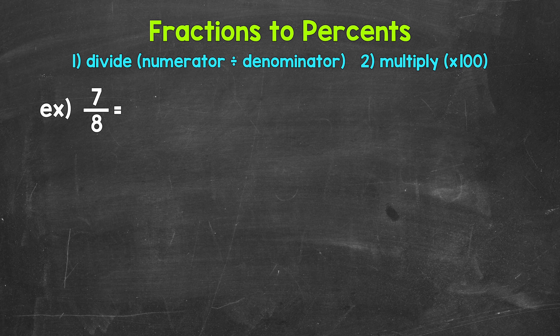Now when we convert a fraction to a percent, we can start by dividing the numerator, the top number of the fraction, by the denominator, the bottom number of the fraction. This will give us a decimal. Once we have that decimal, we convert it to a percent by multiplying it by 100. And a quick way to multiply by 100 is to move the decimal twice to the right.